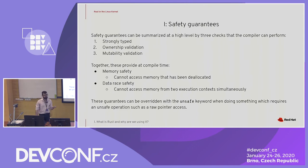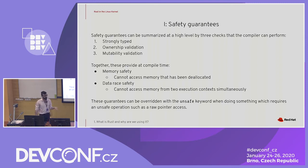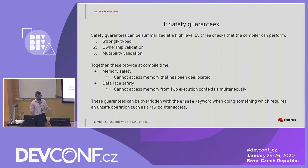Rust is strongly typed, so it's able to do some pretty intense type validation. It has ownership validation — at a high level, what scope owns this data at what time. It also does mutability validation, which essentially says when we have references, which of those references can mutate at a given time. Together these provide pretty attractive guarantees: memory safety with no dangling pointers in safe Rust, data race safety so we can't access data from two locations simultaneously for write access. These guarantees can all be overridden with the unsafe keyword.